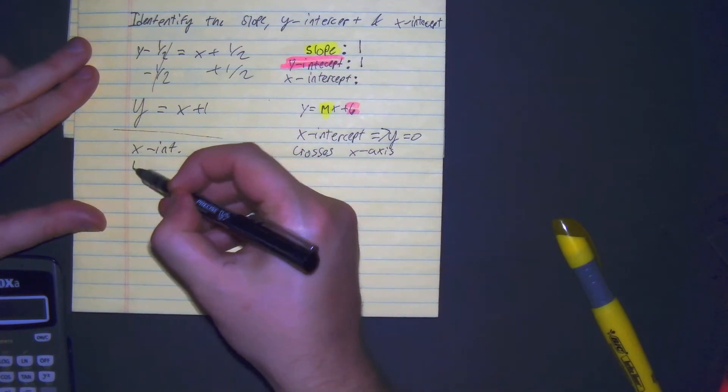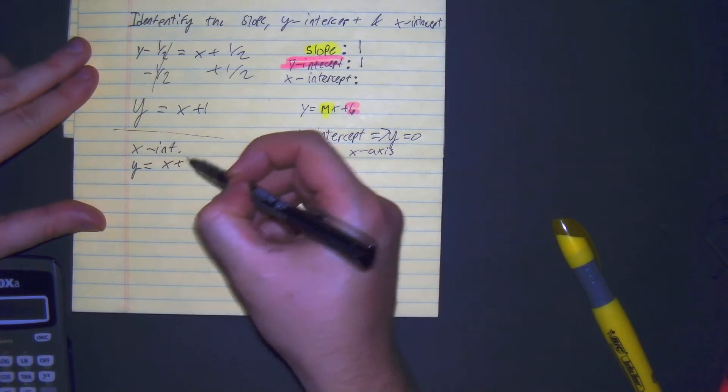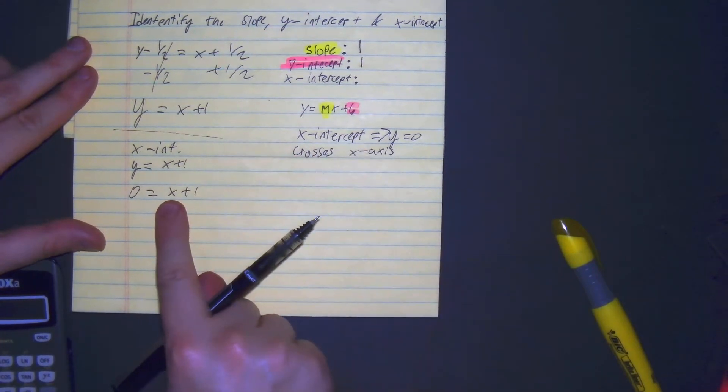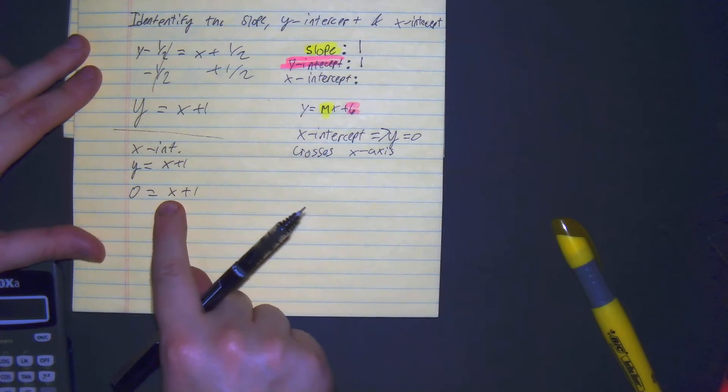So I'm going to rewrite the equation. Y equals x plus 1. Make the y 0. 0 equals x plus 1. So what value of x do we get when y equals 0?